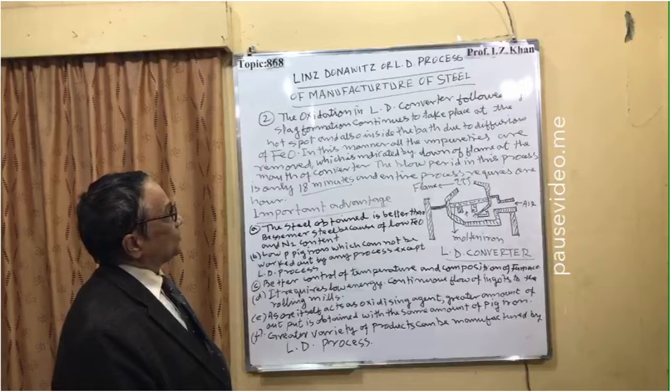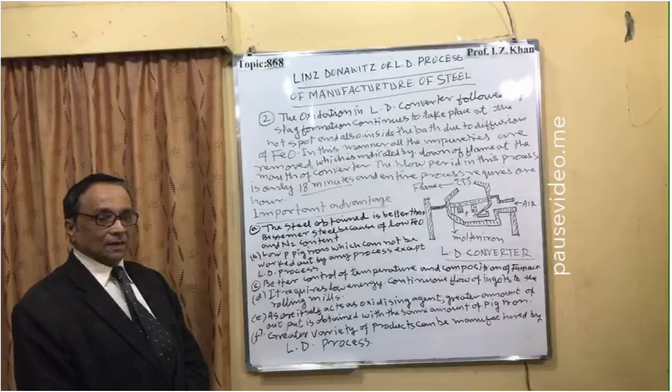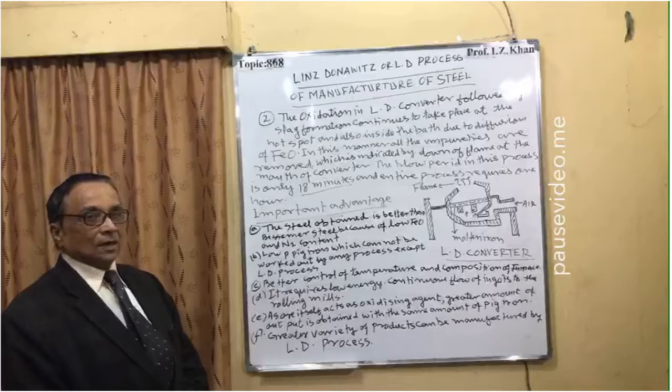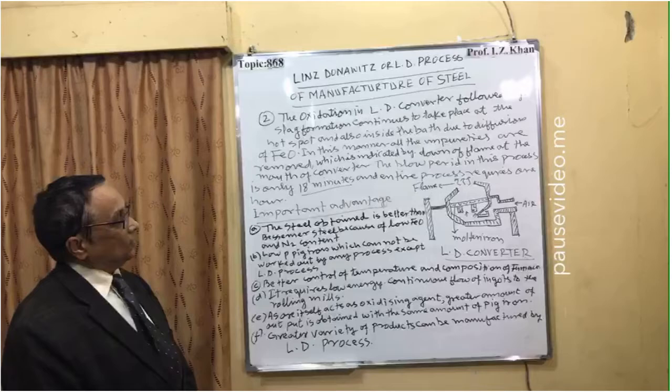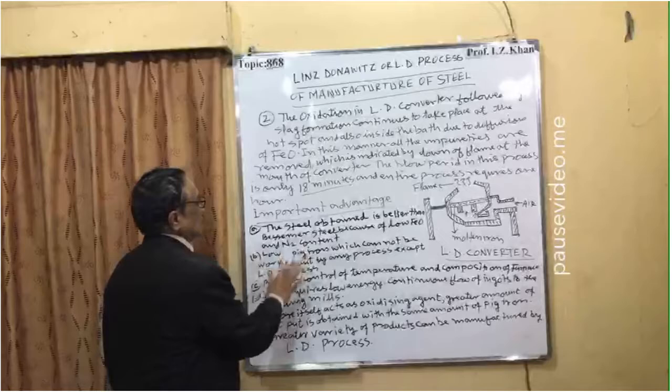Some important advantages: Number 1 — the steel obtained is better than the Bessemer or crucible process because of low iron oxide and nitrogen content, so very high quality steel is produced from the L.D. process.